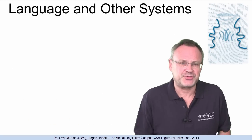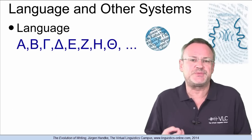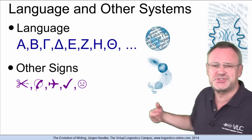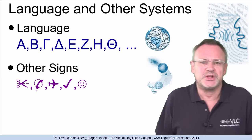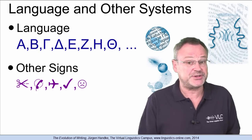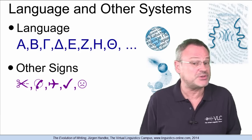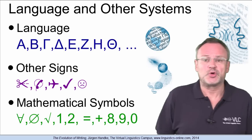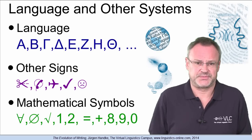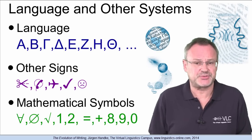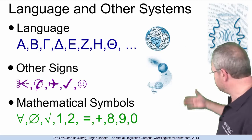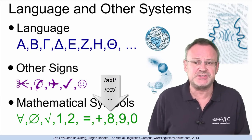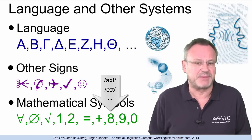In contrast to a writing system that is always linked to a specific language, other signs — paintings, icons, street signs, maps — used for communication do not necessarily depend on the prior knowledge of a language in order to be understood. Mathematical symbols, for example, convey an abstract idea rather than a set utterance. Thus, the symbol for the number 8 can be pronounced in many different languages but still retains the exact same semantic value.